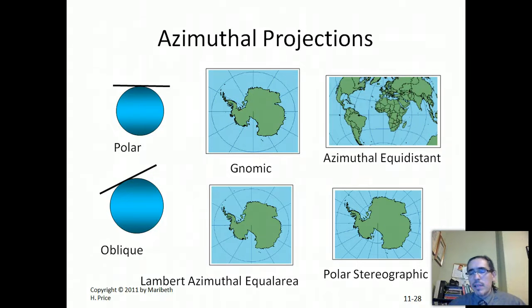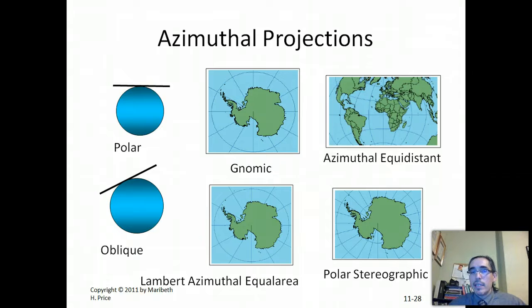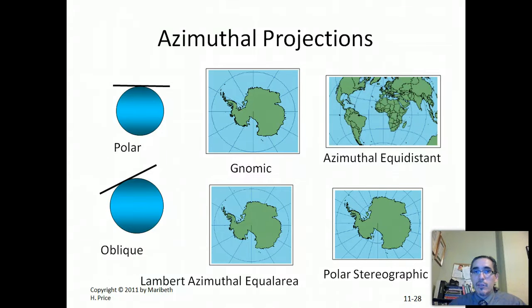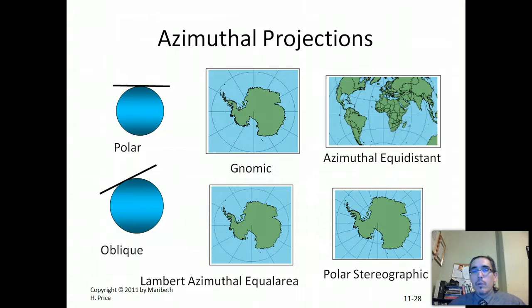So this all might sound very esoteric, and it kind of is, to tell you the truth. But it is very real because we deal with different kinds of projections all the time, and we actually have the power to manipulate them depending on our needs. And you do need to manipulate them because any time you take a globe and you make it into a flat map representation, you inherently are transforming it. And if you're transforming it, you have to be aware of what parameters you're choosing because there's going to be distortion that cannot be avoided. So the question is what kind of distortion are you willing to tolerate and what qualities do you need to preserve? And so those are essentially the questions that are brought up when we're dealing with projections.